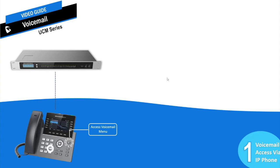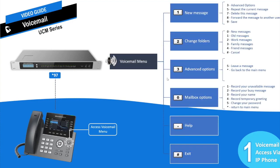Users can also call into the voicemail menu by dialing the access code star 97. If the extension voicemail is configured with a password, the user will be prompted to enter it. Once validated, the user will have access to the voicemail menu prompt. The first option is press 1, which plays all new messages for the user.